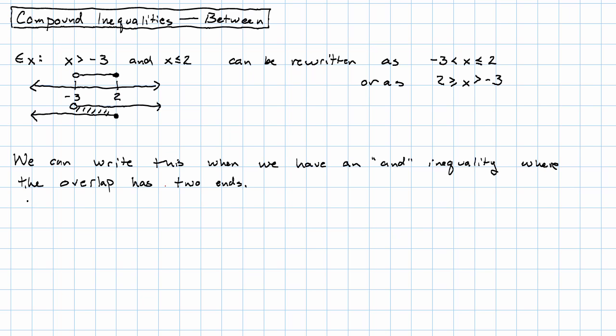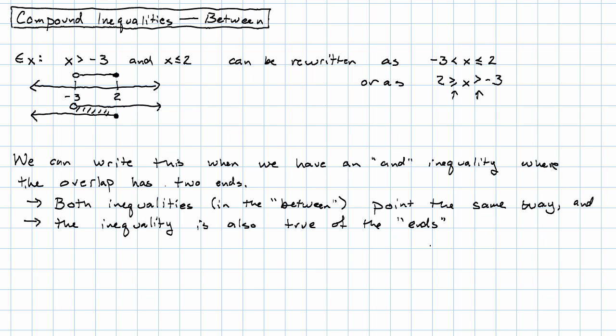We can only do it when we're dealing with an and inequality and the overlap has a left end and a right end. In other words, we can do that when both of the inequalities that we end up writing point the same way, and the inequality is also true of the ends, so here notice negative 3 really is less than 2. 2 really is greater than negative 3. If this weren't true, we could not write this.